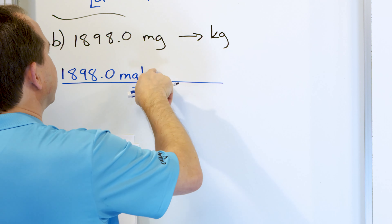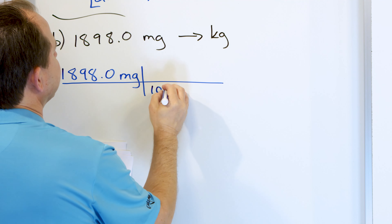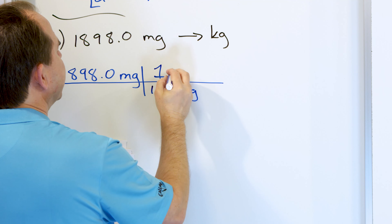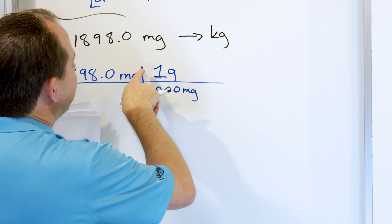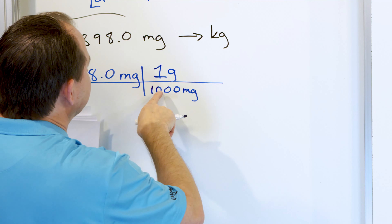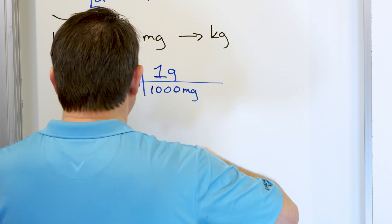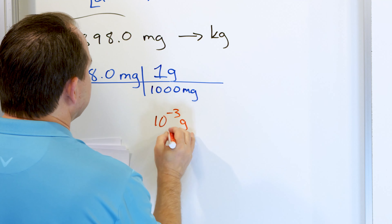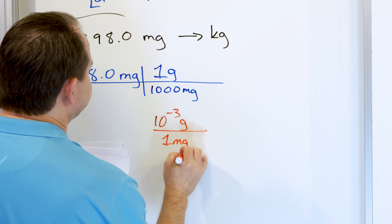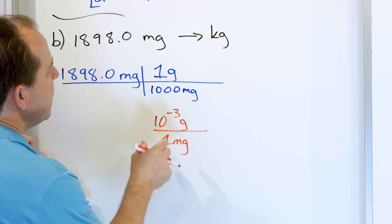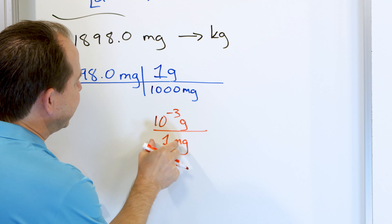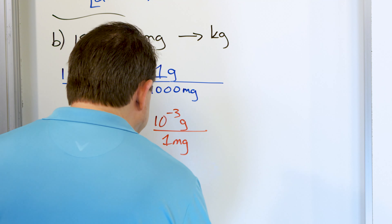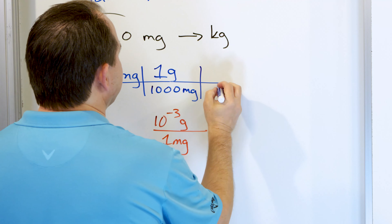You could say one milligram is equal to 10 to the minus three grams, or you could write it as 1,000 milligrams exist inside of one gram. So it's either way — you can say 10 to the minus three grams is equal to one milligram. They're the same thing. Because if you take this negative exponent and move it downstairs, it blows up into 1,000, which is exactly what I have written above. Whatever way you're most comfortable, that's fine.